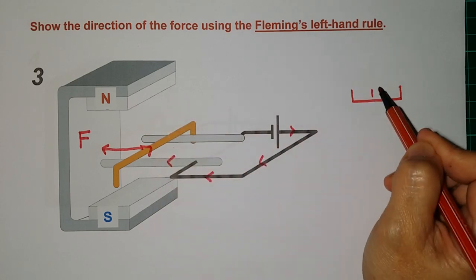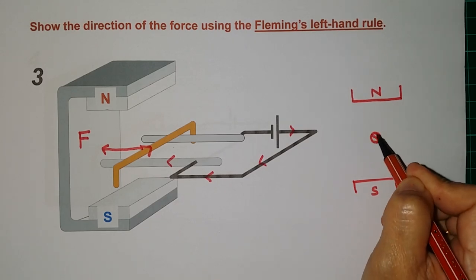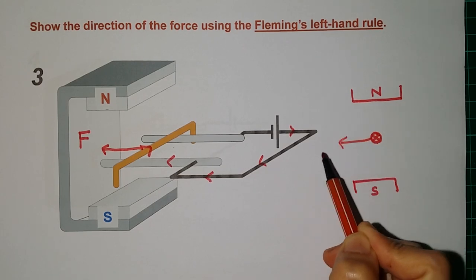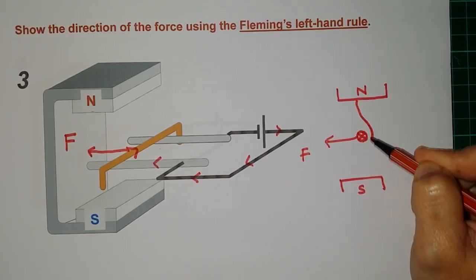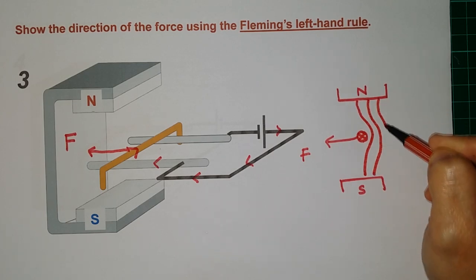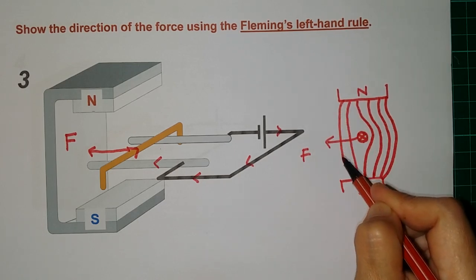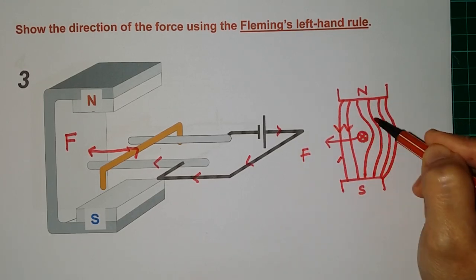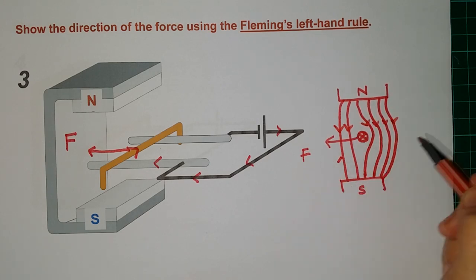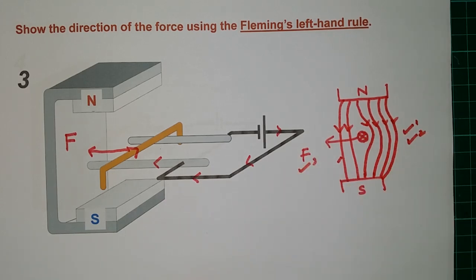To draw the resultant magnetic field for this case: draw the magnet (north and south poles), mark the current going in with symbol X, and since the force is to the left, draw more magnetic field lines on the right side. Draw fewer lines on the left — two is sufficient. Don't forget to add arrows showing direction from north to south. Make sure field lines do not intersect. Mark one for pattern, one for arrow direction, and one for the direction of force acting.